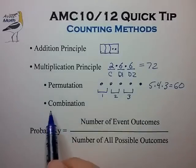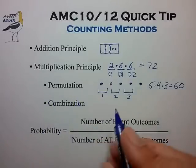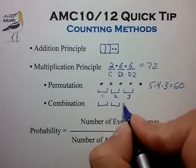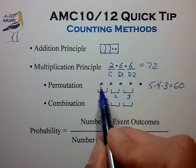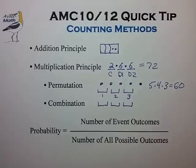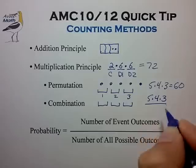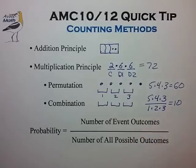A simple example of the combination is similar to the permutation, but now we don't care about the order of the medals — only the number of ways to select a subset of three runners from the set of five distinct runners. This is easily calculated as 5 times 4 times 3 divided by 1 times 2 times 3, which equals 10.